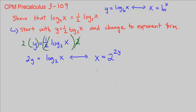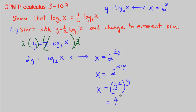Now that we have x = 2^(2y), we can simplify because 2 to the power of 2y is the same as 2 to the power of 2 times y. Writing it explicitly, this is the same as 2 squared, all to the power of y. And since 2 squared is 4, we can say this is 4 to the power of y.